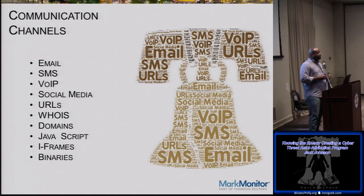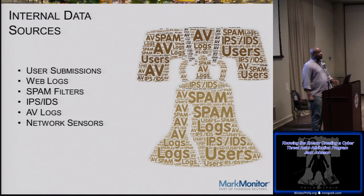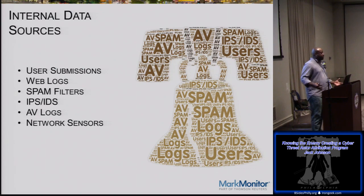We monitor communication channels including email, SMS, and VoIP — these are the pathways we intercept to start building our program. We also monitor internal data sources: users are your greatest asset. If you build a network of users who know what to do when they receive something suspicious, you'll be amazed at the data you can collect daily. It's also important for users to forward suspicious communications from personal accounts, because people check their Yahoo, Gmail, Facebook, and Twitter on work machines — there are still different conduits coming in even if corporate exchange is locked down.